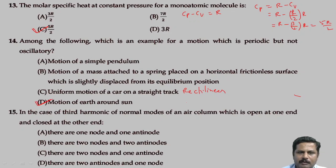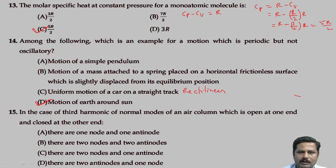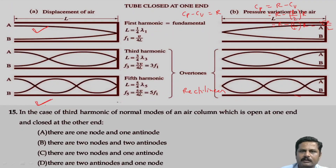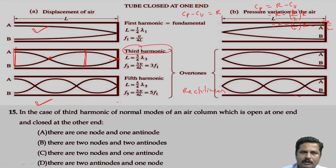In the case of the third harmonic of the normal mode of an air column open at one end and closed at the other end: counting the nodes and antinodes for the third harmonic, there are two nodes and two antinodes present. So option B is the right answer.